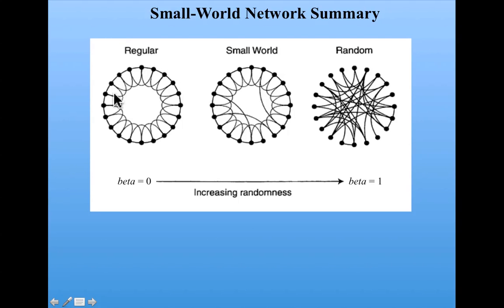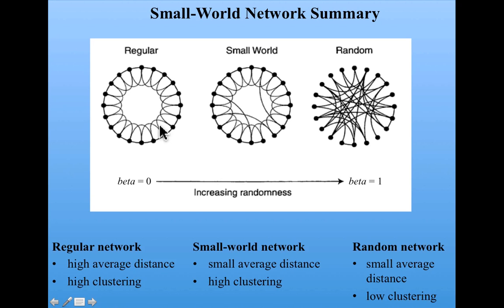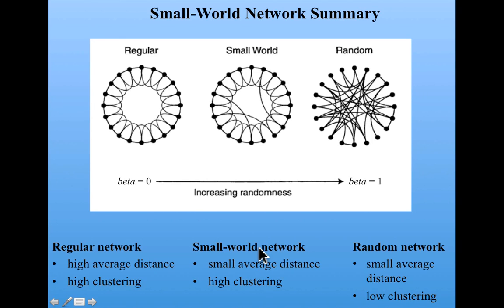Let's finish off this subunit with a summary of what we've learned about small world networks. There's a spectrum of networks from very regular to very random. Regular networks have high average distance between nodes and high clustering — the high clustering comes in if you have more than just two neighbors, such as four neighbors per node. A random network has small average distance but low clustering. Whereas small world networks, which are in some ways more like real world networks, have small average distance and high clustering, similar to the real world networks that Watts and Strogatz investigated.